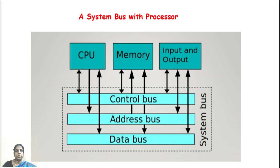Since the buses carry information, they can be classified as address bus, data bus, and control bus. Every computer device is made up of a processor, memory, and I/O devices, so the system bus is subdivided into these three types. The address bus carries the memory or I/O address that the processor needs to access in order to read and write — it is a one-way or unidirectional bus.